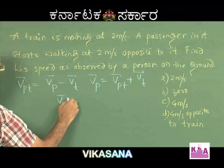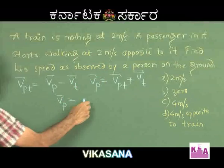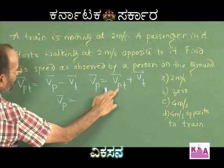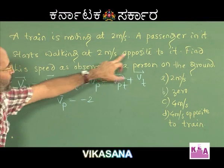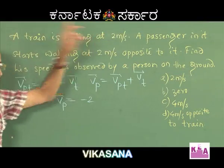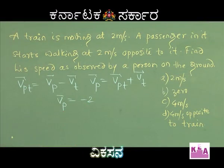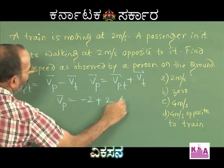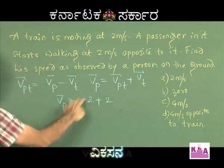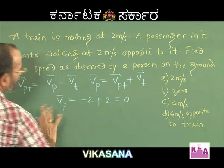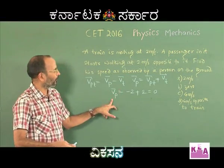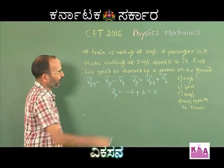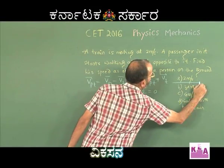The velocity of the passenger with respect to the person standing on the ground equals the velocity of the passenger with respect to the train, which is minus 2 (since he walks opposite to the train), plus the velocity of the train which is positive 2. So minus 2 plus 2 equals 0. The absolute velocity of the passenger as seen by a person on the ground is 0, making option B perfectly correct.